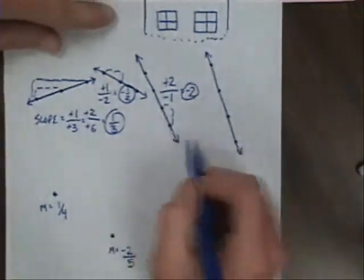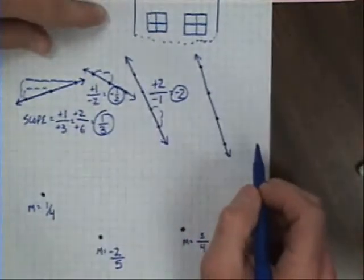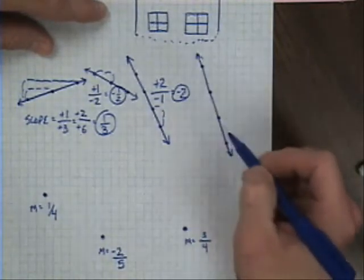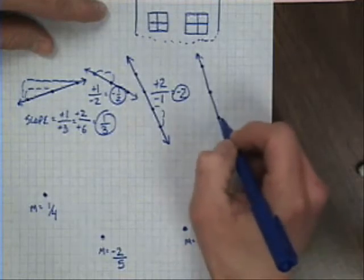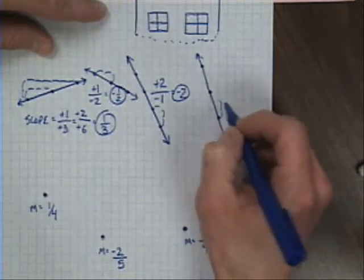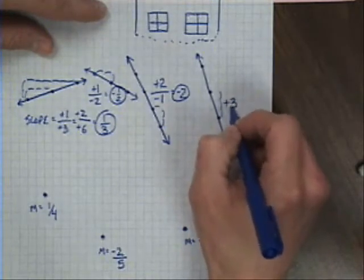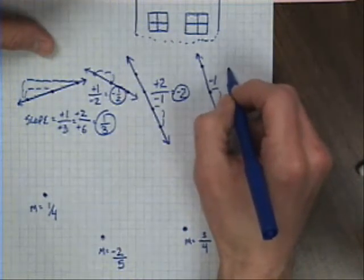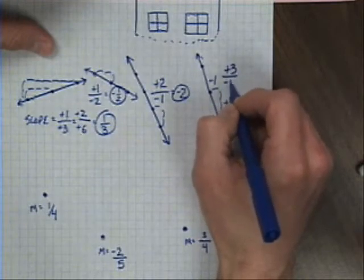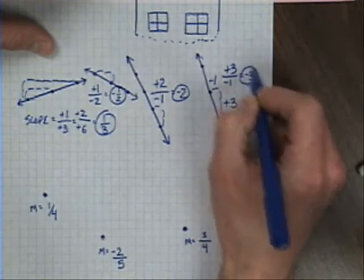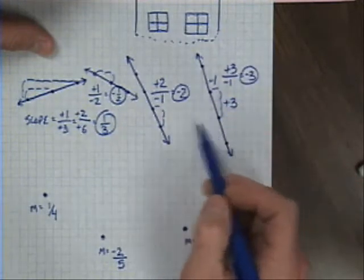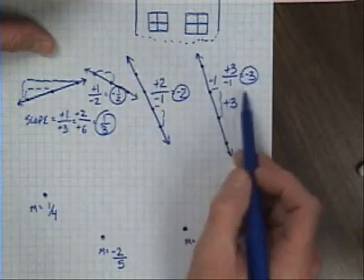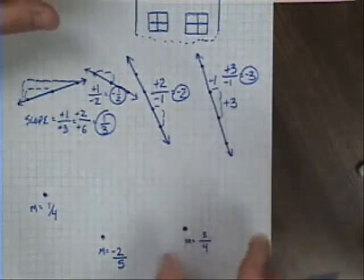Finally, the fourth example — the third negative in a row. You can see that one will also be negative. Any two points work fine. I'll choose two points: up three, left one. When I write my slope as rise over run, it's positive three over negative one, or negative three. Still negative, but you can see this one is slightly steeper than the previous one. As that number increases, the steepness increases.